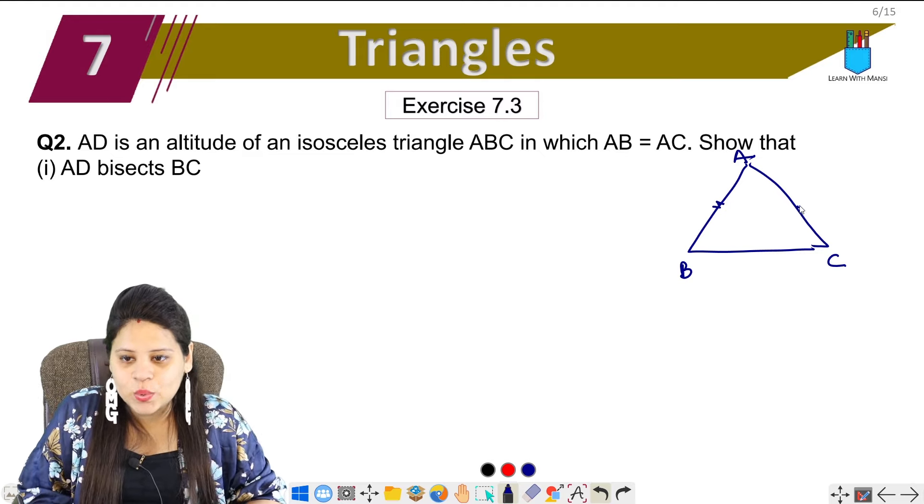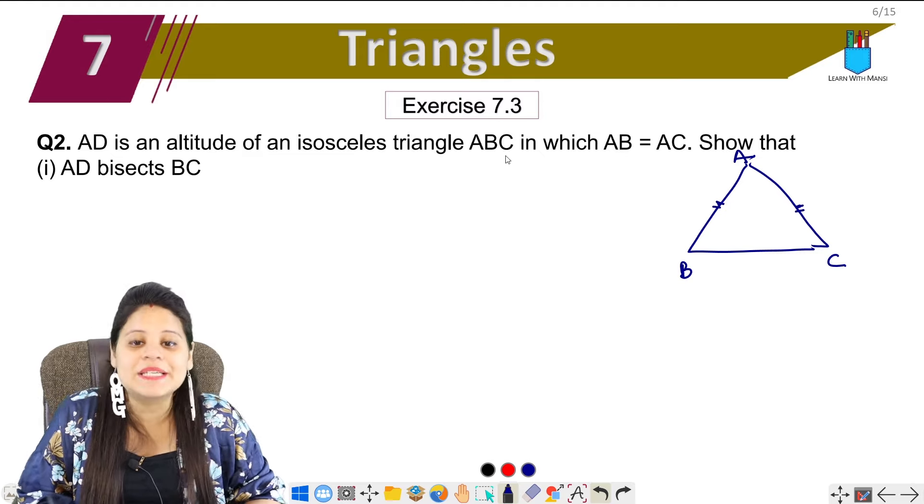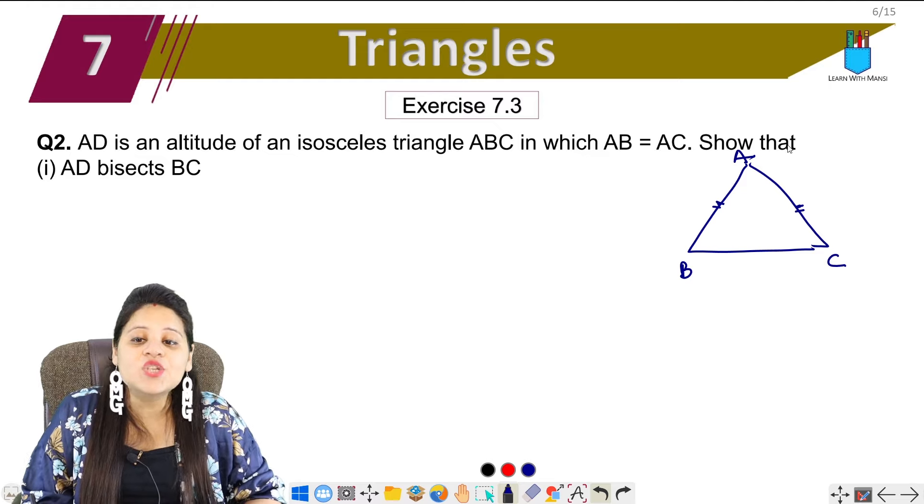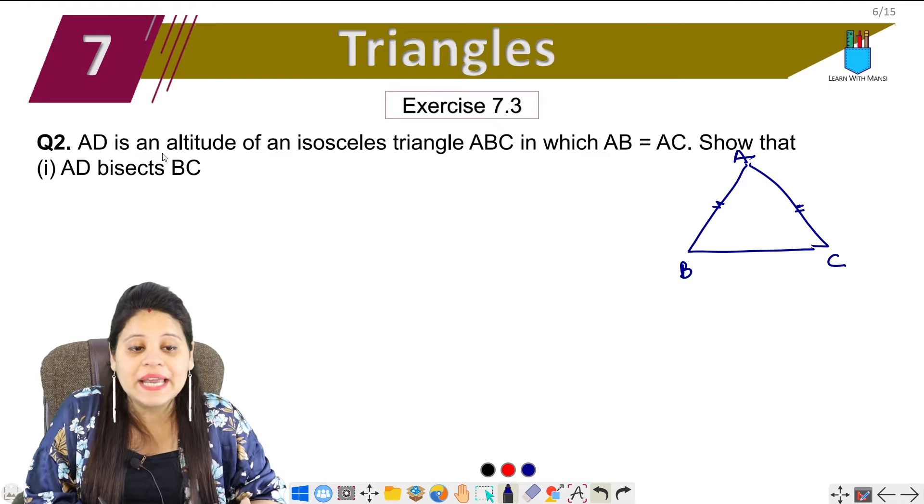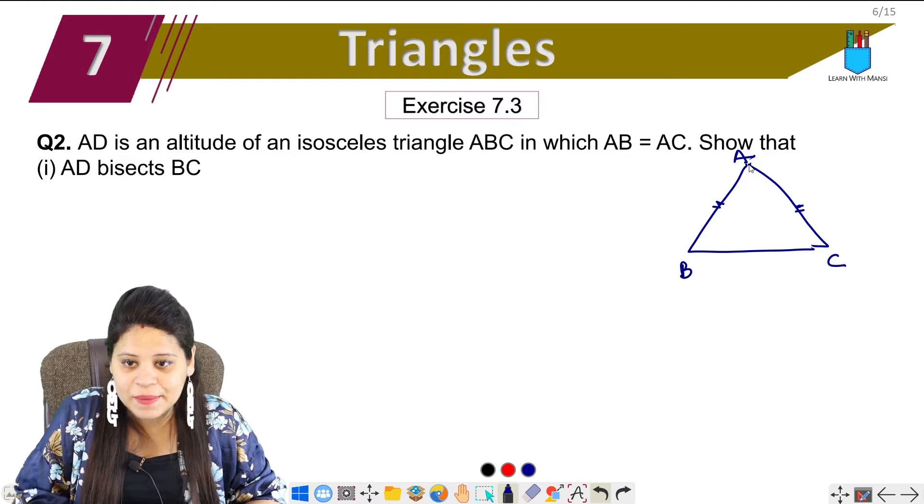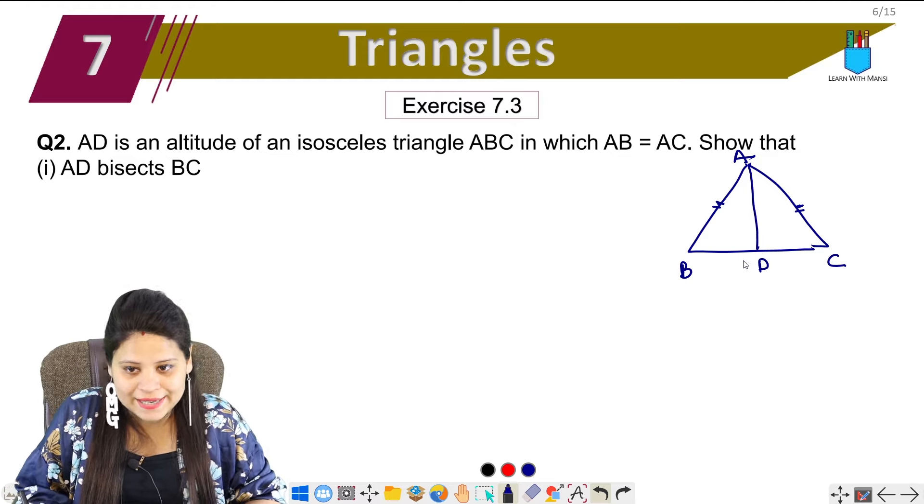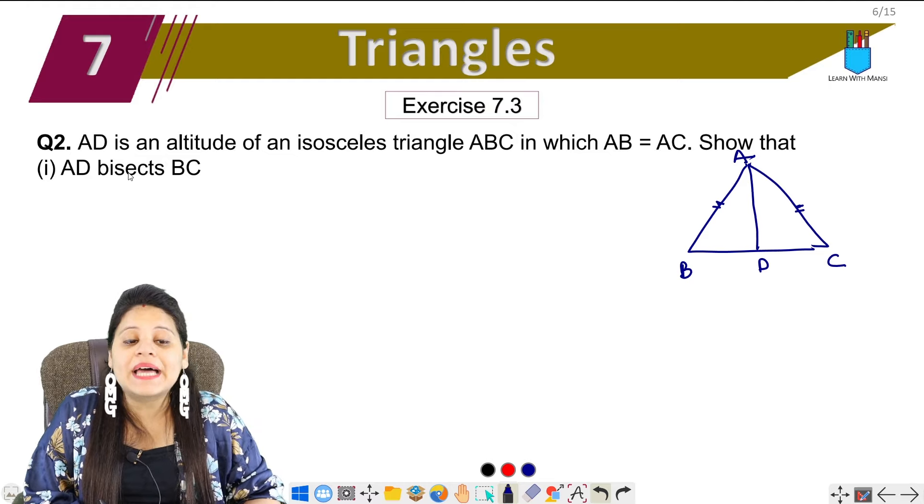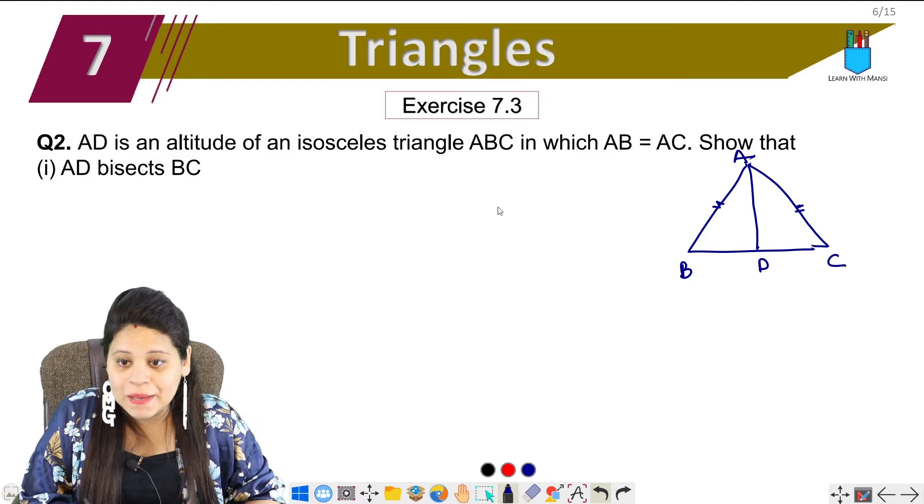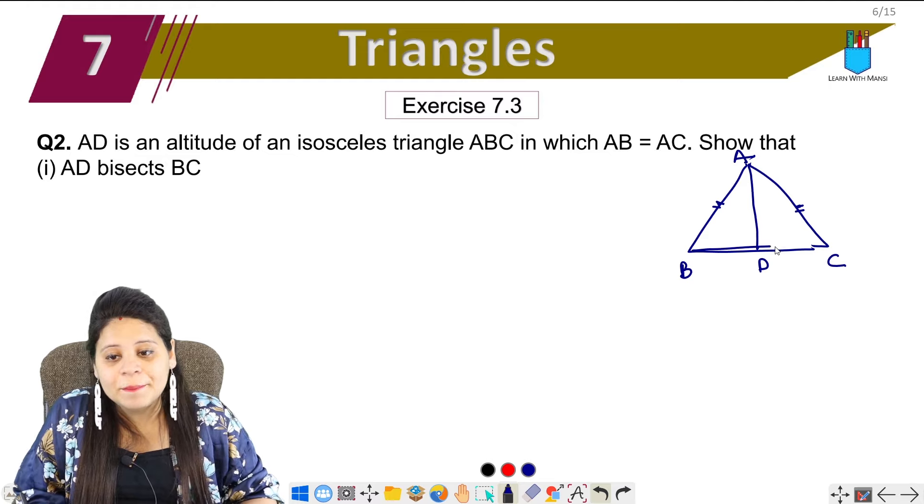AB is equal to AC. Okay, so we have to show that AD is an altitude. We will make an altitude like this. We have to tell AD bisects BC.